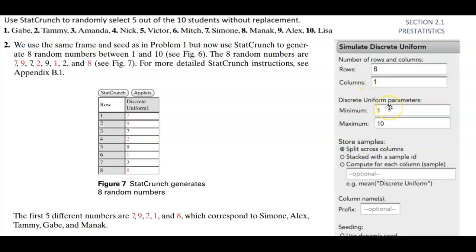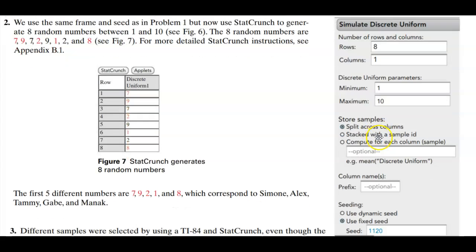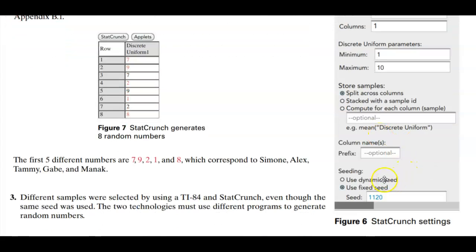The discrete uniform parameters is that we start with one student going all the way to ten. We're going to split across columns and we're also going to use the fixed seed since we used in the previous example 1,120.